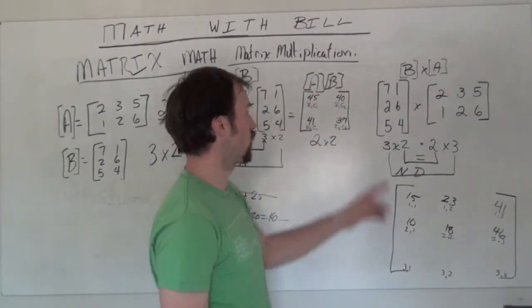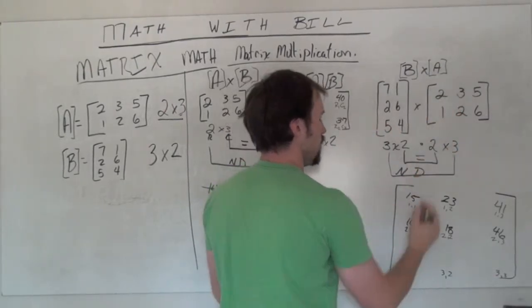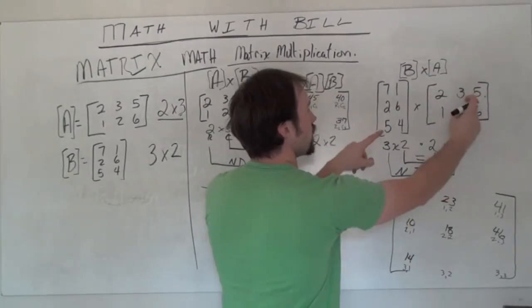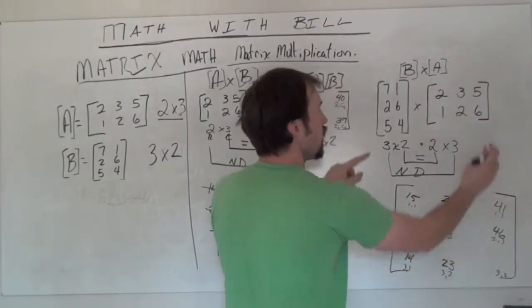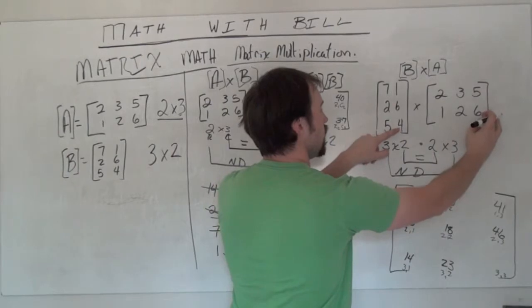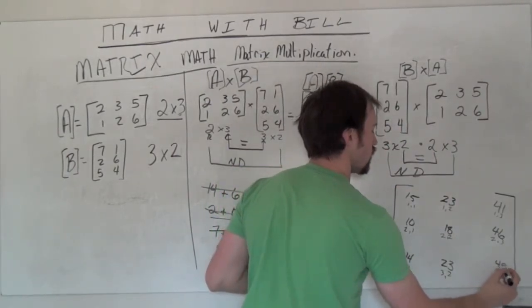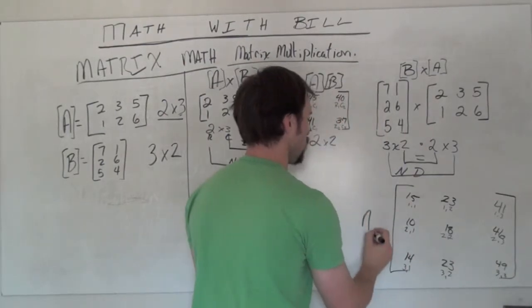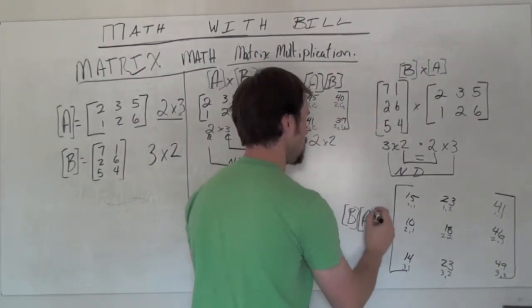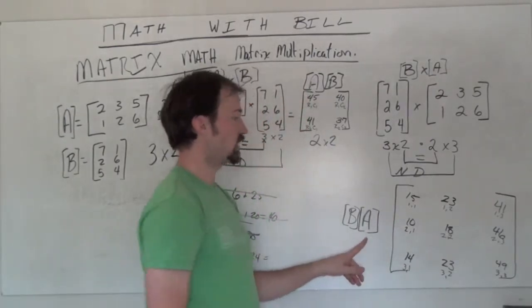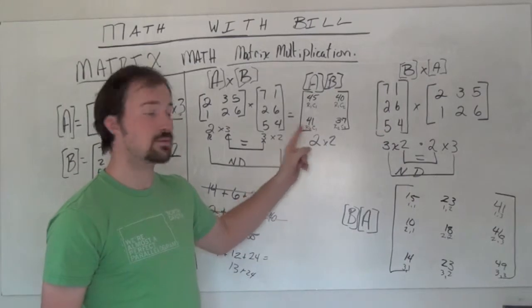Finishing off our last row, so 5 times 2 plus 1 times 4 gives us 14. And then we have 15 and 8 more for 23. And finally, 25 plus 24 is 49. So this is matrix B times matrix A, which you can see now is very different from matrix A times matrix B.